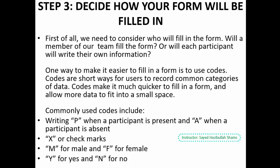These codes must be explained in the instruction part of the form. For example, if we write 'P' — what does it mean? So 'P' is for present, 'A' is for absent, 'X' can be used for check marks, 'M' for male and 'F' for female, 'Y' for yes and 'N' for no. So now we can use these codes effectively and collect data in a very short period of time — it is a good trick to use codes.